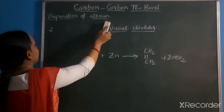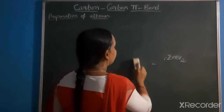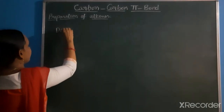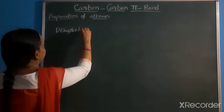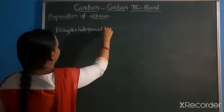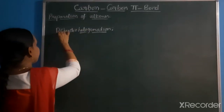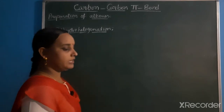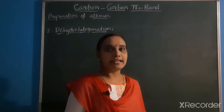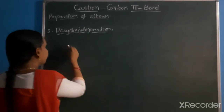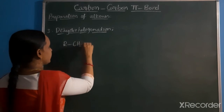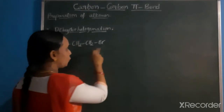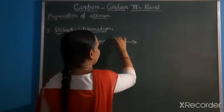The third preparation method is dehydrohalogenation. Alkyl halides are used - for example, alkyl bromide such as CH2CH2Br. Dehydrohalogenation involves removal of both a hydrogen and a halogen from the alkyl halide to form an alkene.